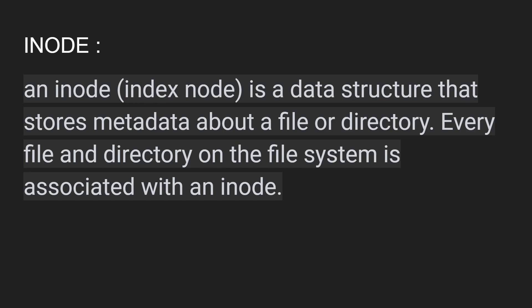We are human, so we understand our own languages, but a computer doesn't understand our language — computers understand only numbers, in binary. So basically, when we create a file in our system, the computer allocates a unique number, also called an inode, to every file. For example, if I create a test.txt file, that file has a unique inode number. Whenever we try to fetch the file from the Linux terminal, the operating system retrieves it through that number, because that's how the computer understands the file's destination and name.